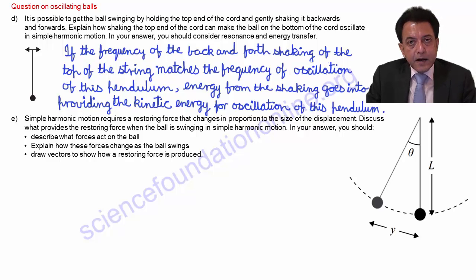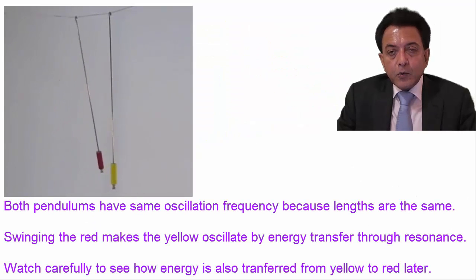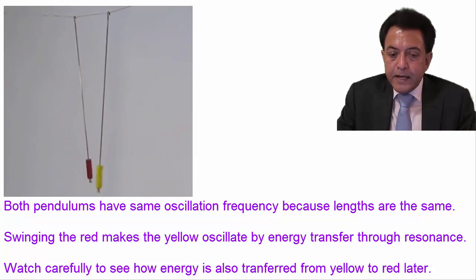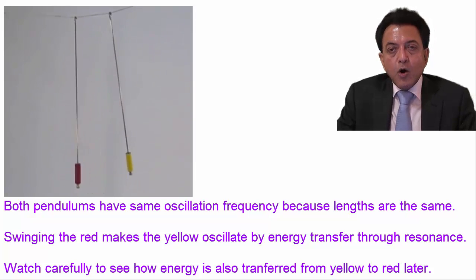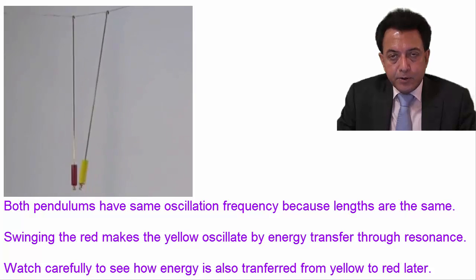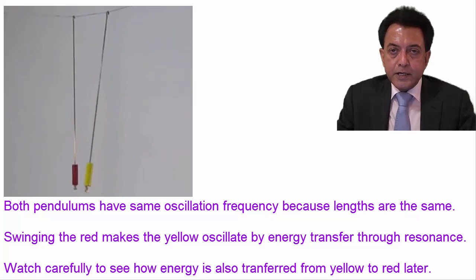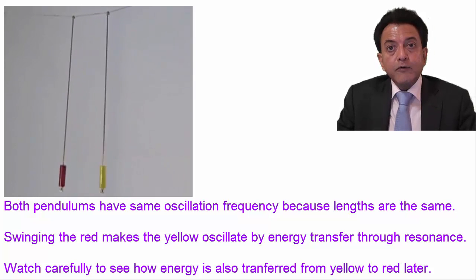This is an example of the general phenomenon of resonance. When the driving frequency of an oscillation, that's the frequency with which we did the shaking in this particular instance, matches a natural frequency of a system like the frequency of oscillation of this pendulum here, but this can even be a swing or a stretched string or an air column, etc., then the energy driving the oscillation goes into increasing energy of the oscillating system. And this is what produces an increase in the amplitude of the oscillations.